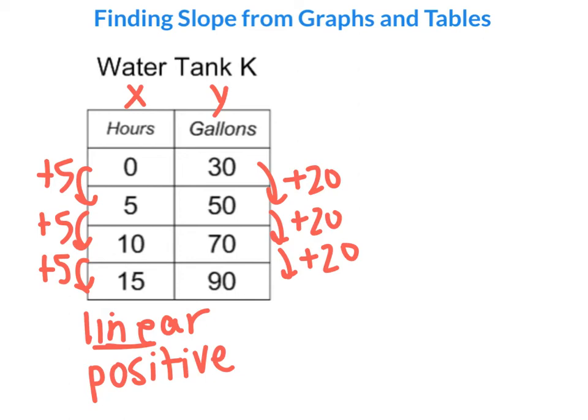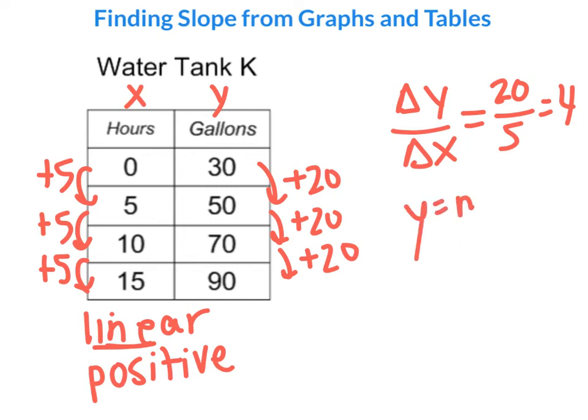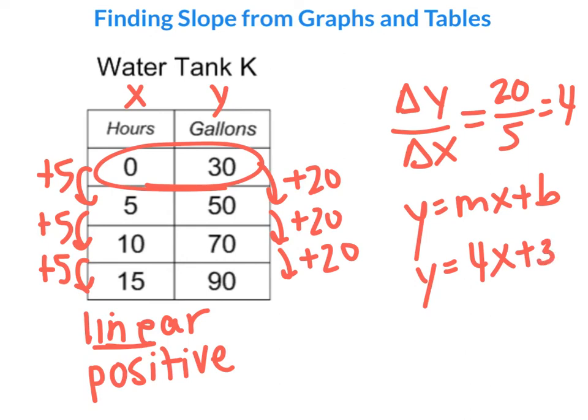We are going to look again for our change in y over our change in x, which we've already identified. Our change in y was 20, our change in x is 5, and that's 4. So there are 4 gallons every 1 hour. We'll go ahead and throw that into our equation of y equals mx plus b. So y equals 4 times our number of hours, x, plus our y-intercept. And our y-intercept over here would be 30 because at 0 hours it's 30 gallons.